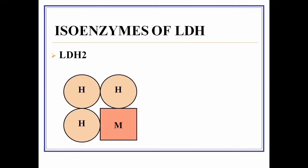LDH2 is another isoenzyme of LDH. It is a tetrameric enzyme made up of two types of polypeptide chains — three H-type and one M-type polypeptide chain.